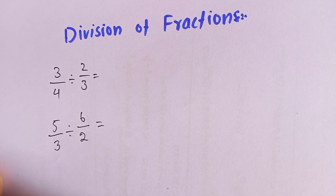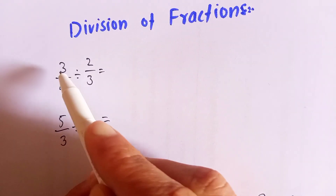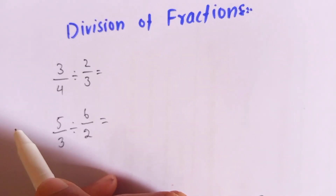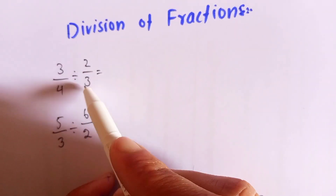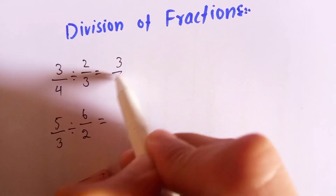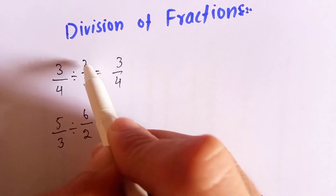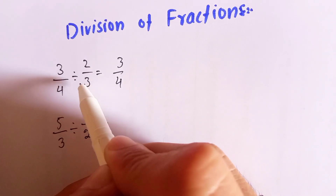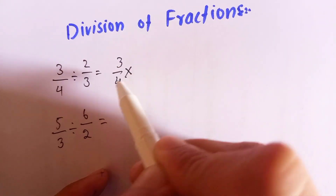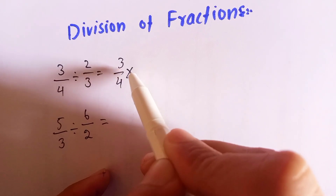Let's start the video. In this first example, one fraction is 3 over 4 and the other fraction is 2 over 3. We are going to divide 3 over 4 by 2 over 3. So we write 3 over 4, and to divide this fraction by 2 over 3, we will convert the division sign into a multiplication sign.